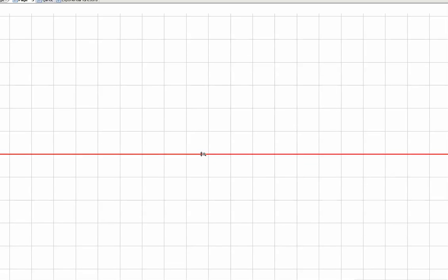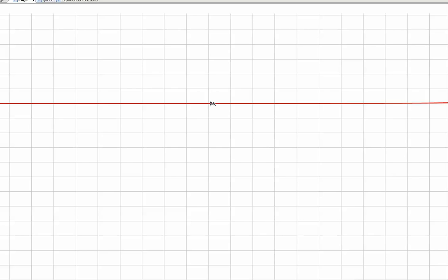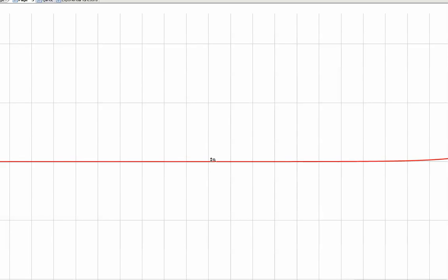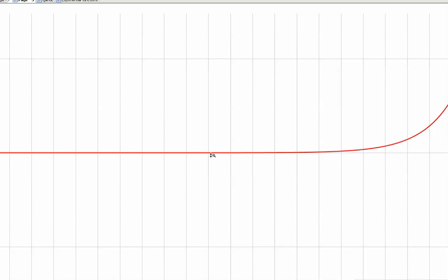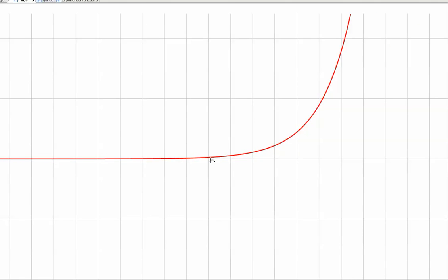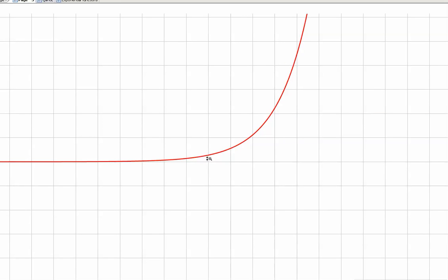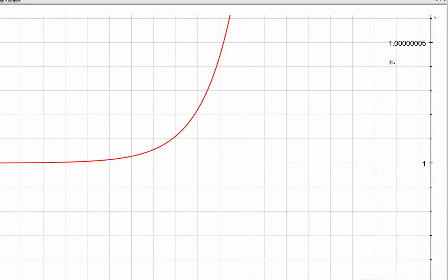But if I zoom in enough times, eventually I'll see that it isn't actually y equals 1. It gets very close, but it isn't. I'm zooming in on that point to show that it's very close to y equals 1 without being y equals 1 at all.